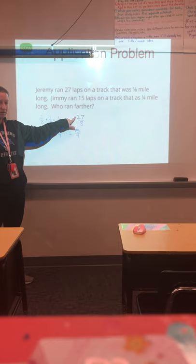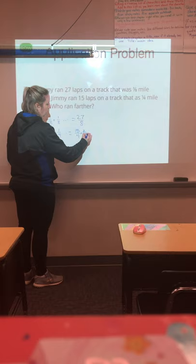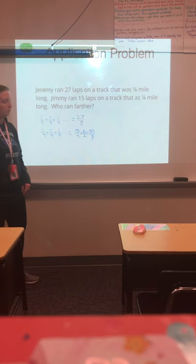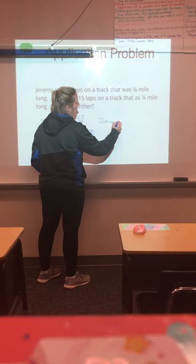But, well, I'm going to look at my numerator first. Can I multiply 15 times anything to equal 27? I can't, but can I multiply four times anything to equal eight? Yes, I can multiply times two. So I'm going to multiply this times two. Whatever I do to the bottom, I do to the top. So my equivalent fraction is 30 eighths. So now when I compare them, I'm comparing their numerators. Well, 27 is less than 30. So that means that Jimmy, even though he ran fewer laps, he ran farther.